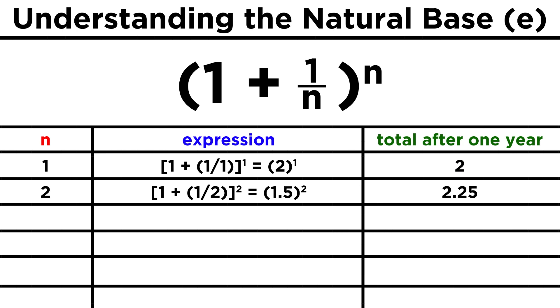What if instead you got 50% interest twice a year? N would equal 2, so you get half your investment as interest after six months, and then half of that total after another six months. 1.5 times 1.5 gives us 2.25.